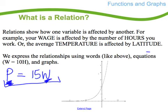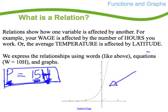To get your pay, you take your wage per hour and multiply it by the number of hours that you work. It's a relationship, and we can express relationships using words like we did above, equations like W = 10H, or graphs. This graph isn't of this equation—it's actually an exponential relationship.